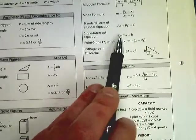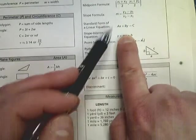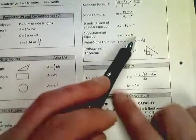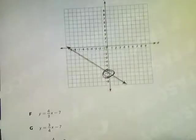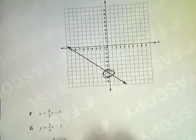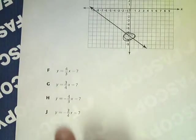That would be, if I covered up the mx, it says y equals b, which means on the y-axis that's where it hits. All of these have negative 7, so in this case the y-intercept is not very helpful.